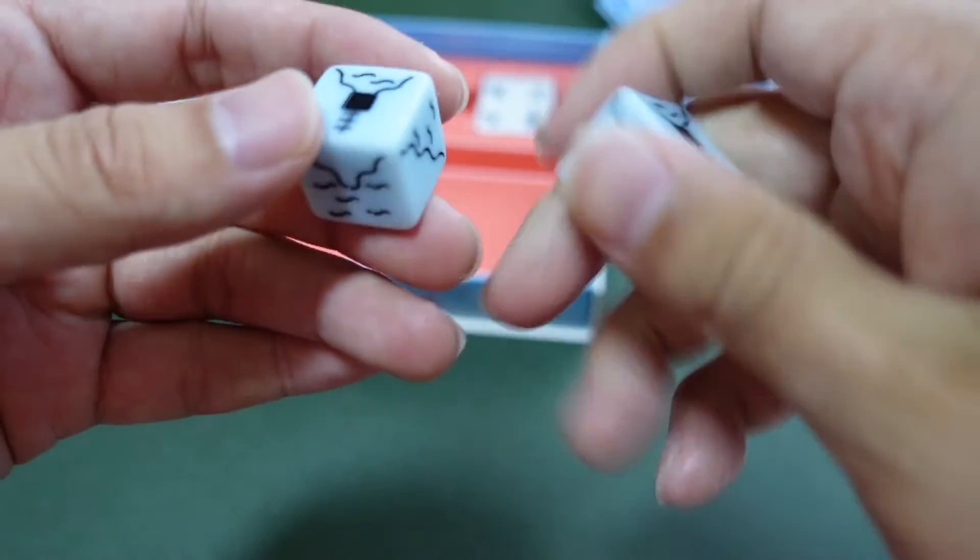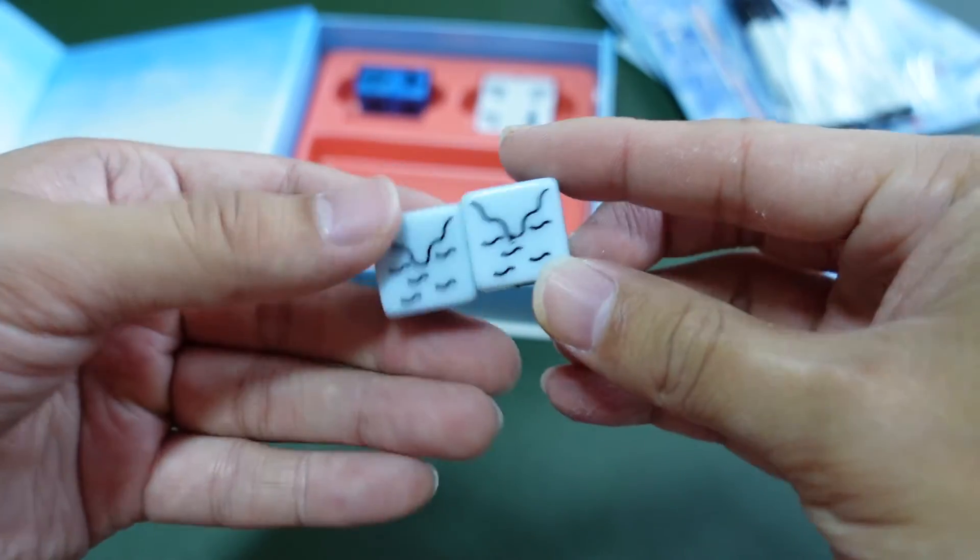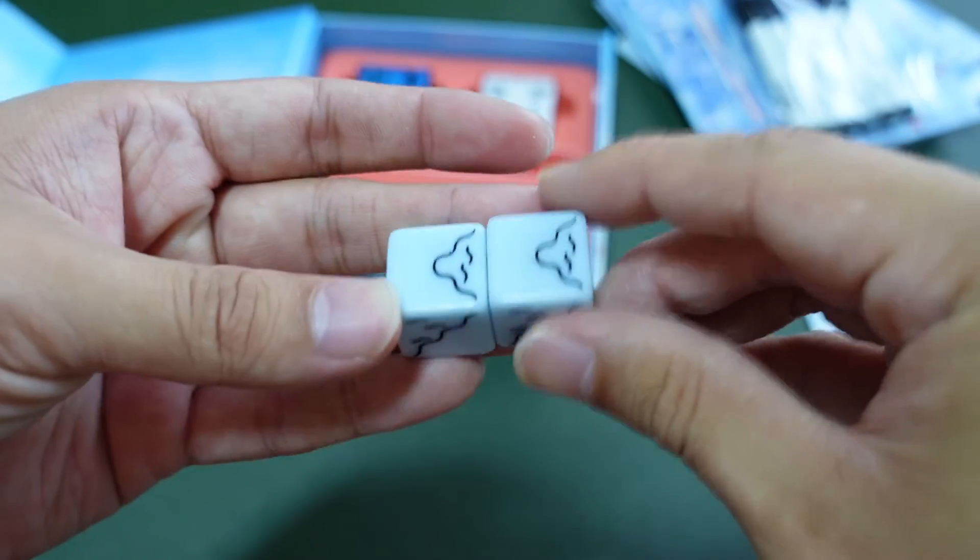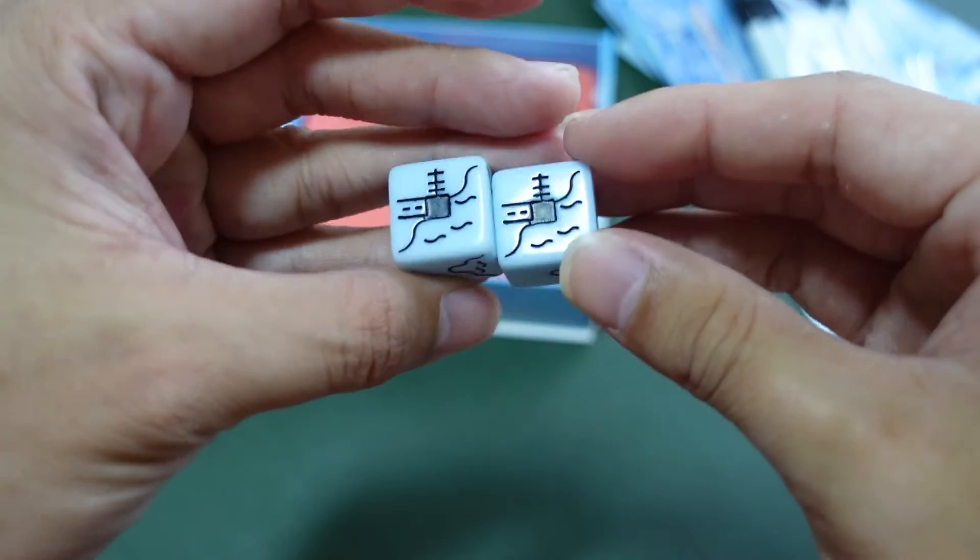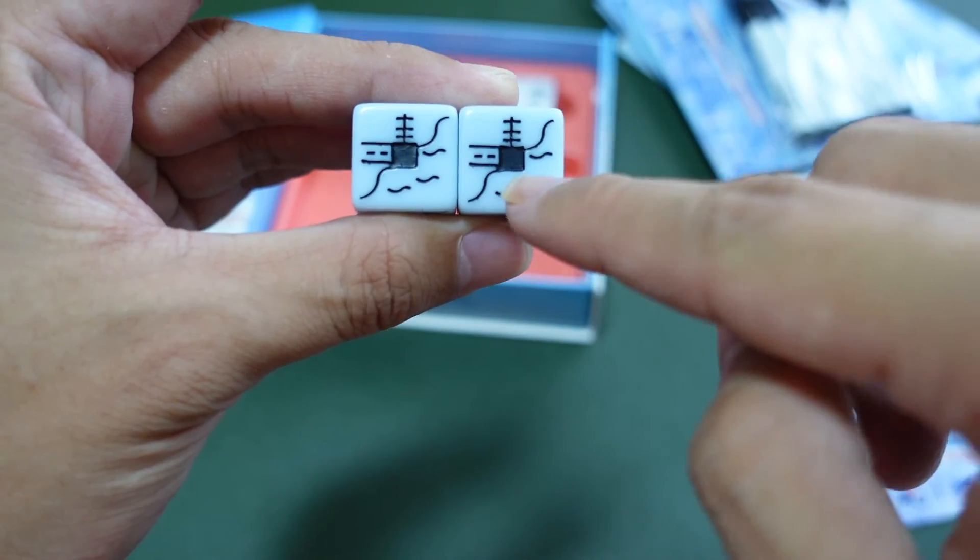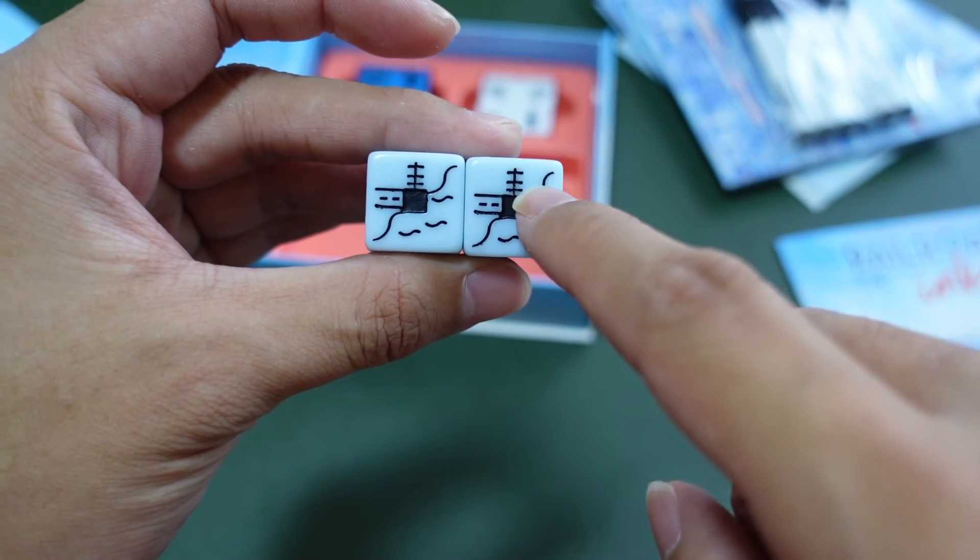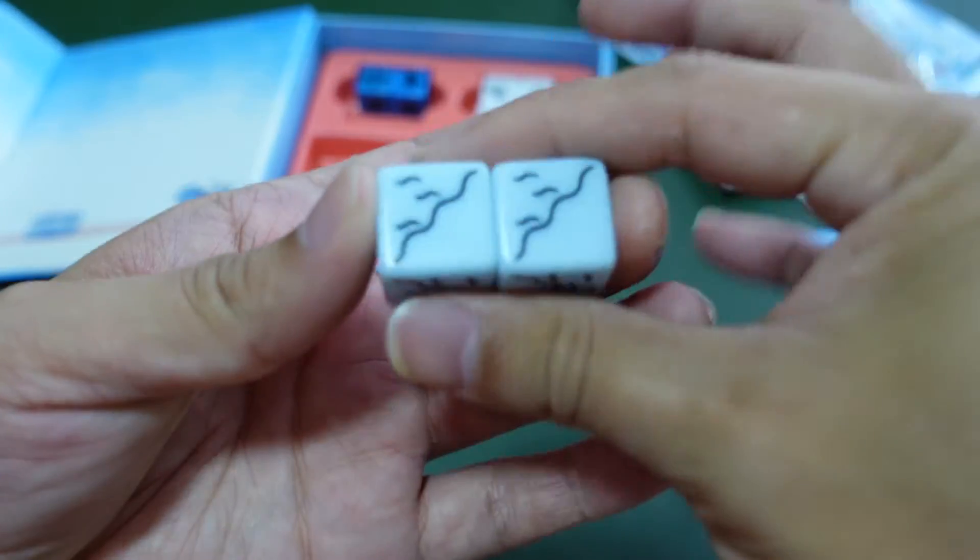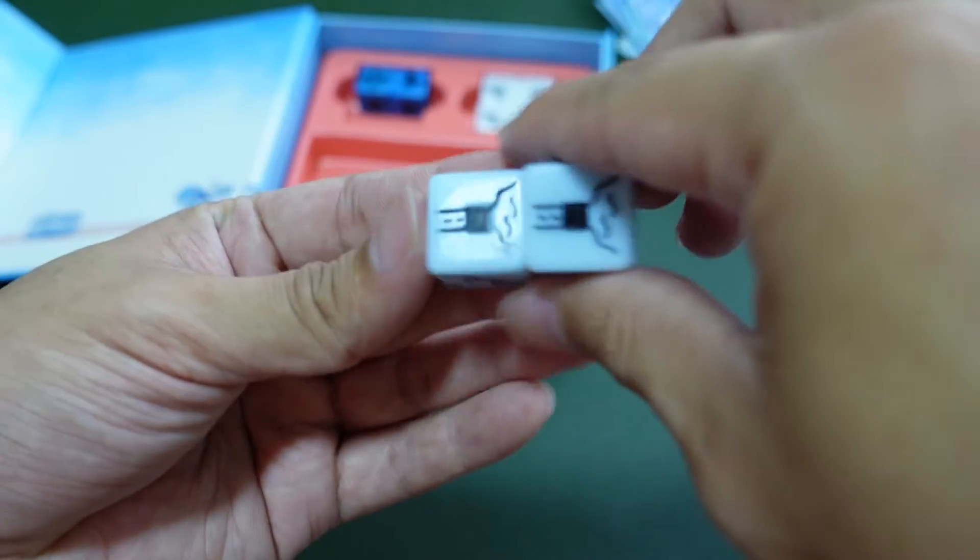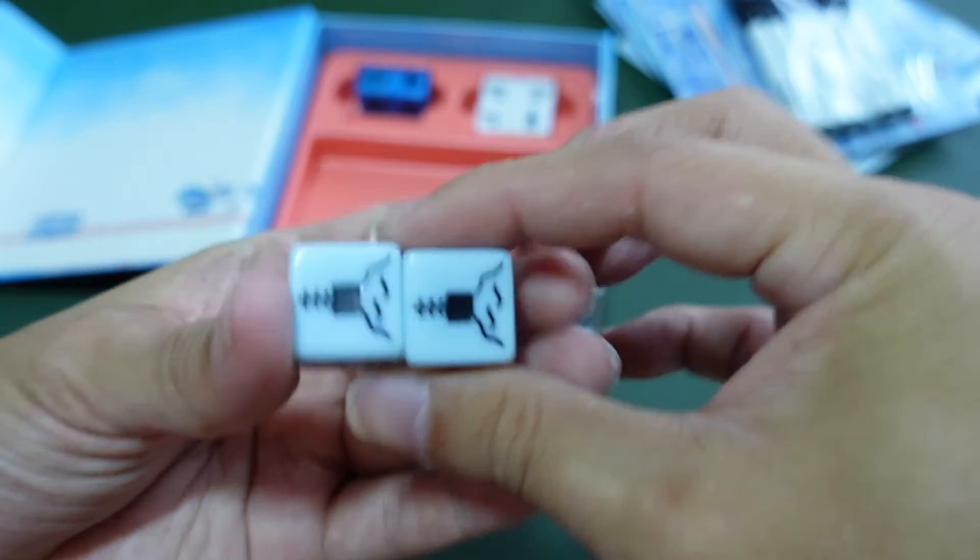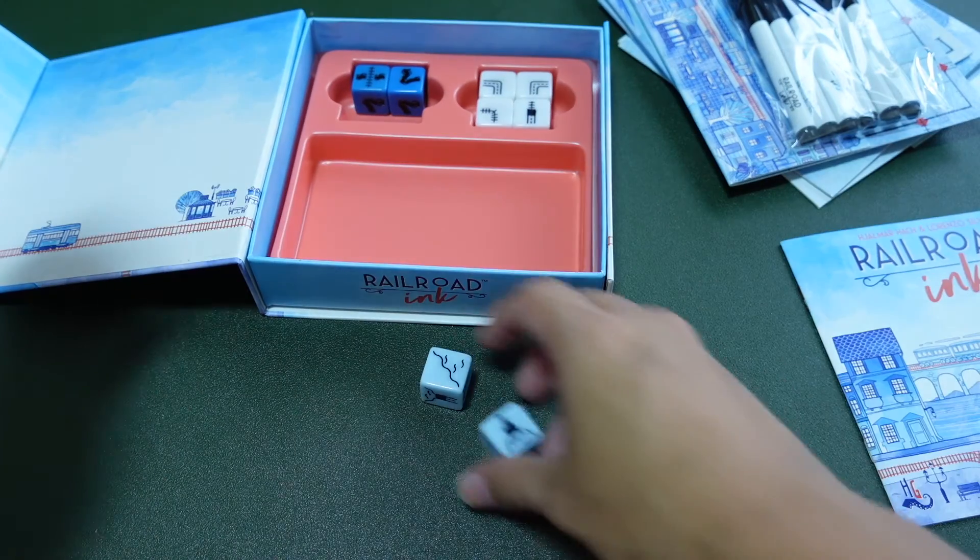These are the lake dice. There's a bit of a Carcassonne feel to this. This die has two corners with lake, one side with a railroad and road. This has three sides with lake. This is one side with a road and one side with a railroad. I'm thinking the lake ones are quite fun.